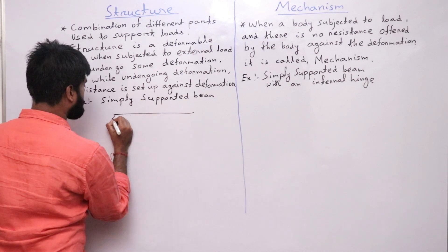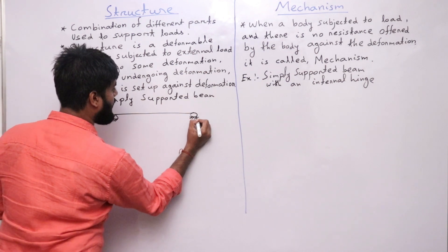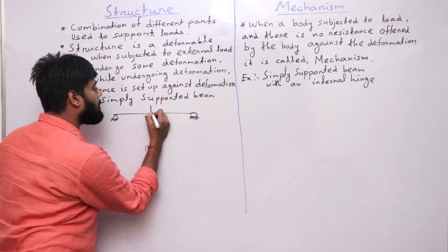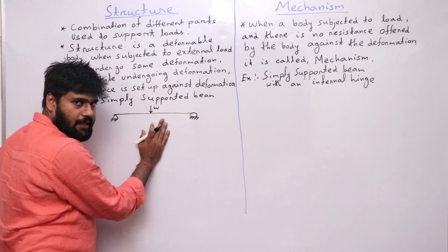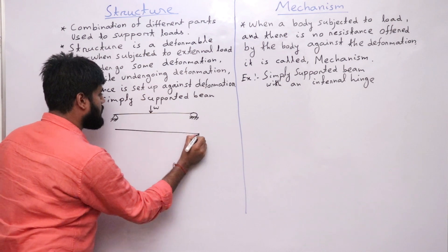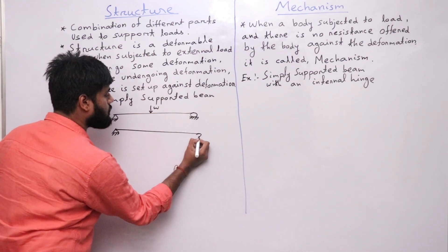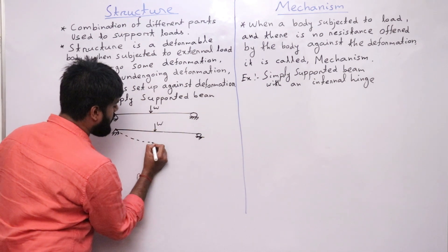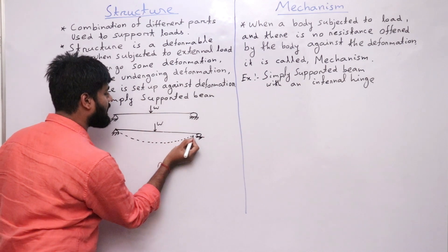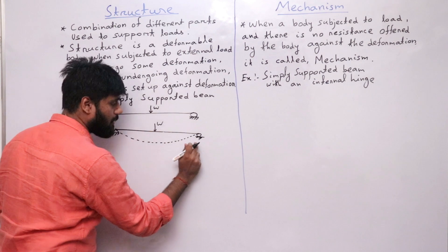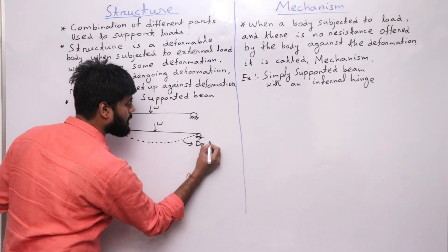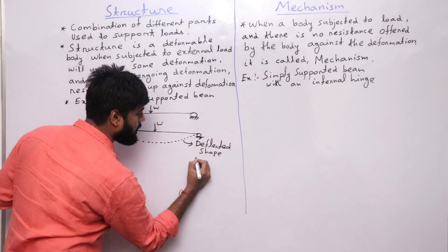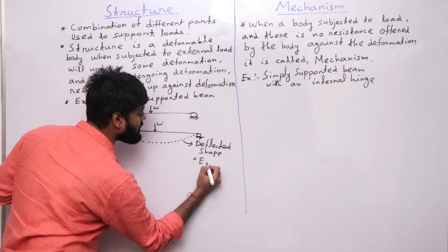This is a simply supported beam, and this simply supported beam is an example of a structure. If I apply a load W on this simply supported beam, the structure will undergo some deformation. The deflected shape will be like this, and we call it the elastic curve.